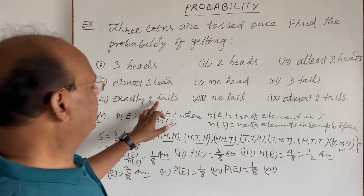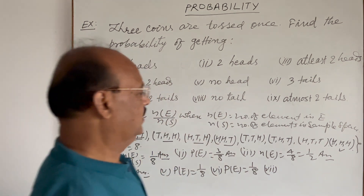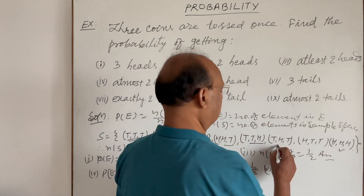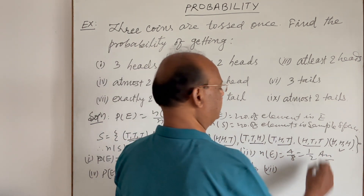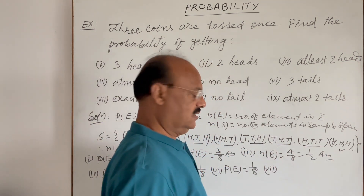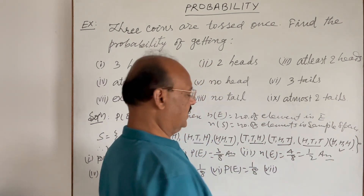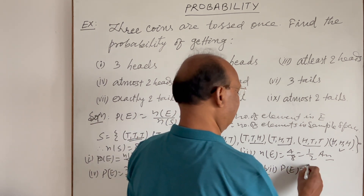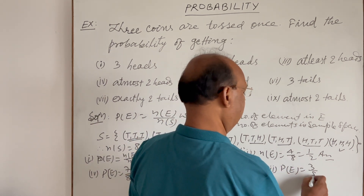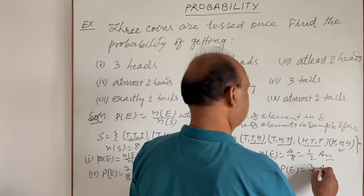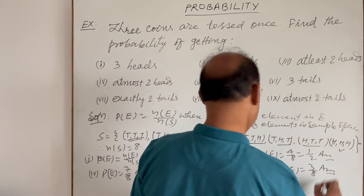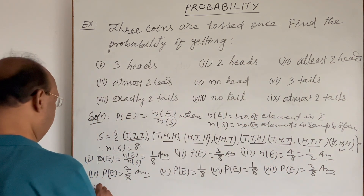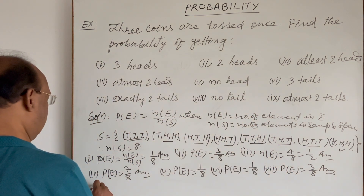Seventh part: exactly two tails. There are three elements having exactly two tails — T T H, T H T, H T T — so the probability is 3/8. This is the answer for the seventh part.